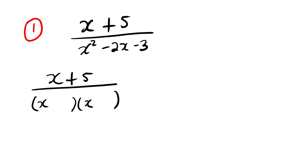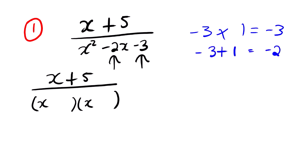We find two numbers that multiply to give negative 3 and add to give negative 2. Those factors are negative 3 and 1, since negative 3 multiplied by 1 equals negative 3, and negative 3 plus 1 equals negative 2. So we put positive 1 and negative 3 in the brackets. After factorizing, we cannot factorize any further.